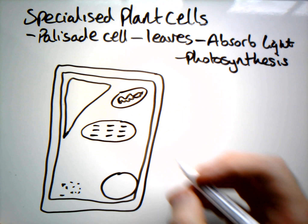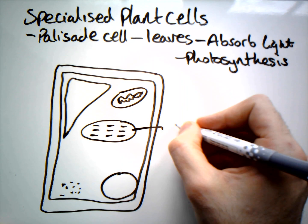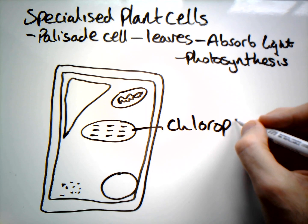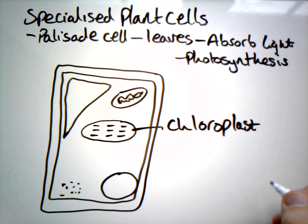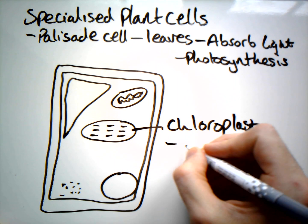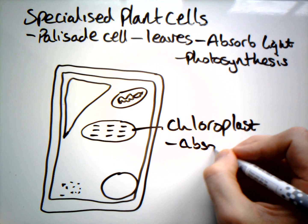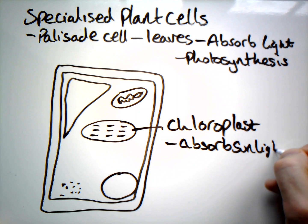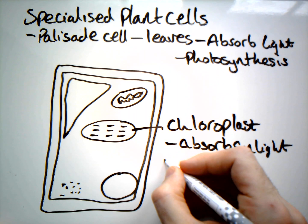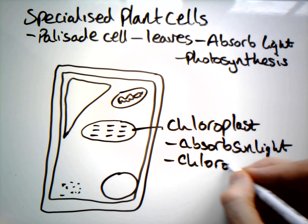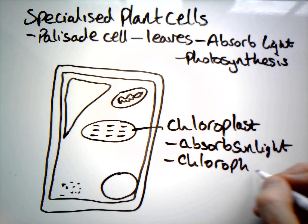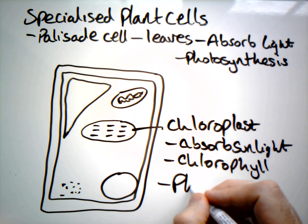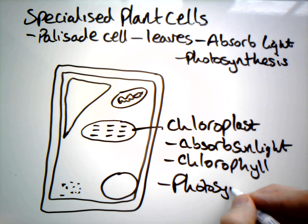The chloroplast is the key feature of this palisade cell, and it's going to have lots of them. These chloroplasts absorb sunlight — they have a special pigment called chlorophyll, which is specially designed to absorb light, and it's where photosynthesis is going to take place.